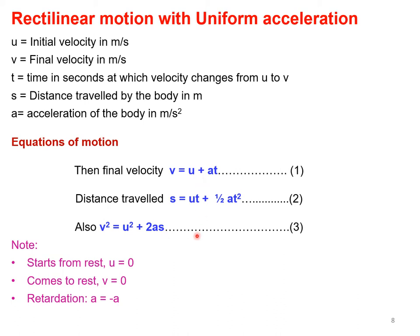In these equations, if the body starts from rest, the initial velocity u = 0. If the particle comes to rest, the final velocity v = 0. In the case of negative acceleration or retardation, we substitute a as minus a, because the particle moves against the direction of acceleration due to gravity, making the acceleration negative.